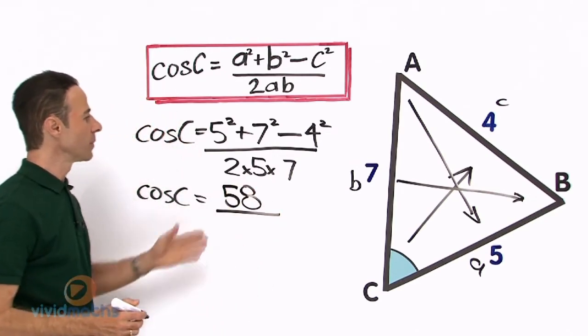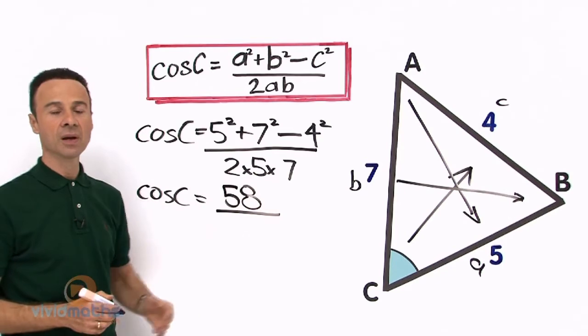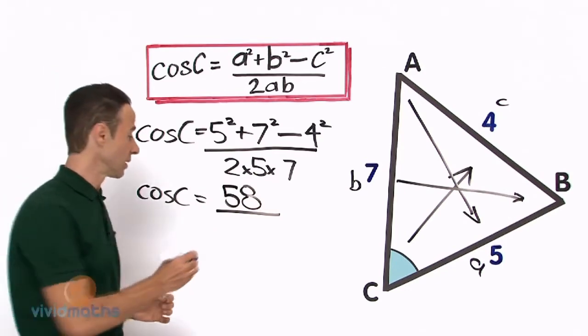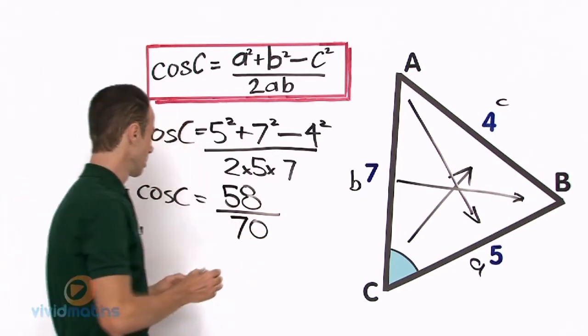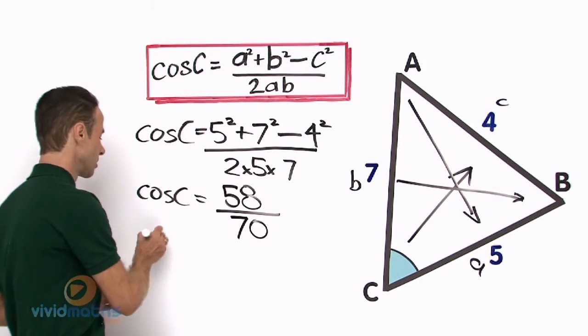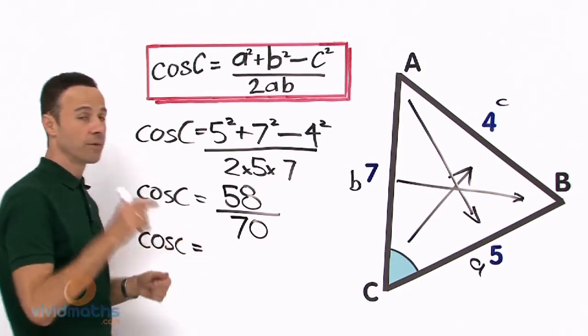All over 2 times 5 times 7, that is going to give us 70. OK, so cos C equals 58 divided by 70.